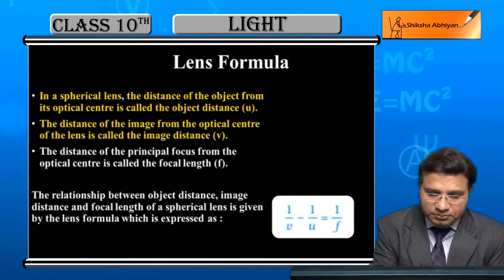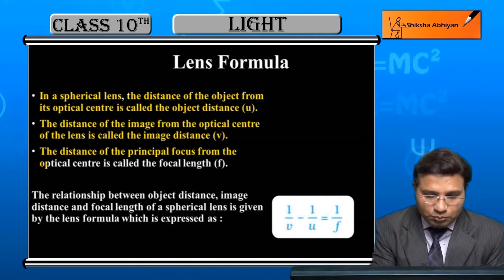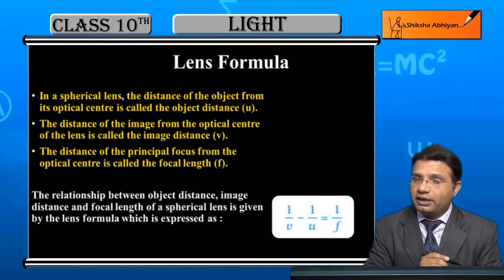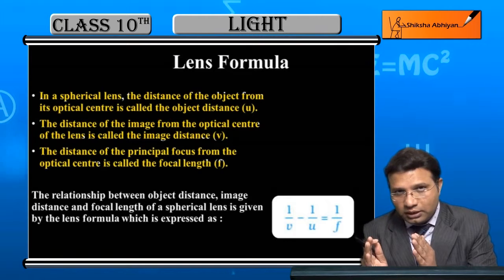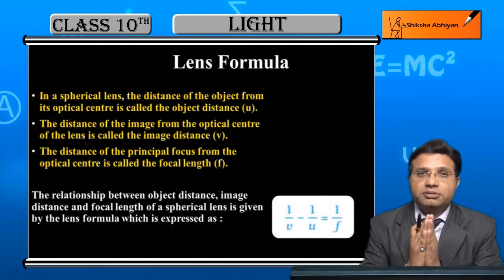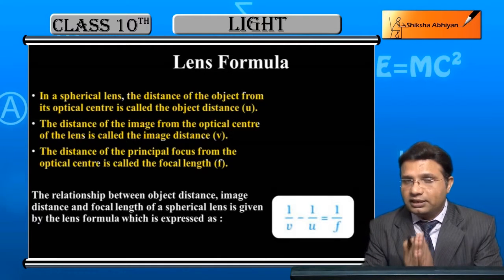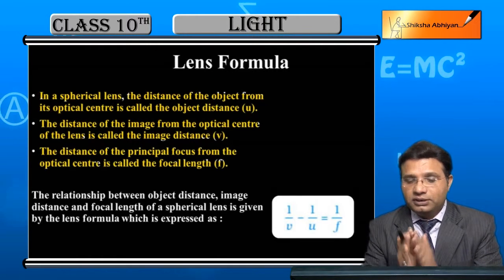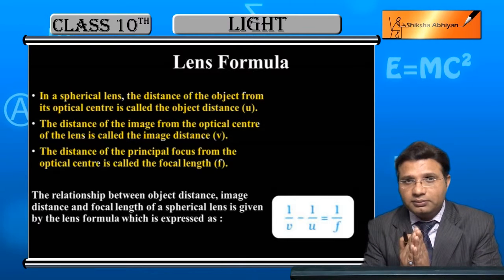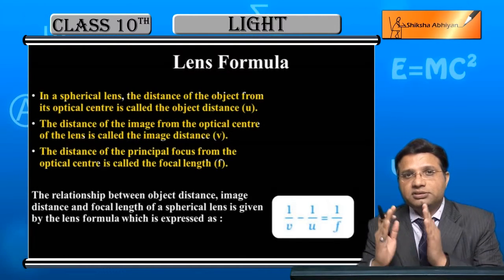The distance of the principal focus from the optical center is called the focal length, denoted by f. जो focus होगा उसकी distance optical center तक measure करेंगे — उस distance को बोलेंगे हम focal length, denoted by f. यह चीज mirror में भी होती है — object distance, image distance, and focal length.